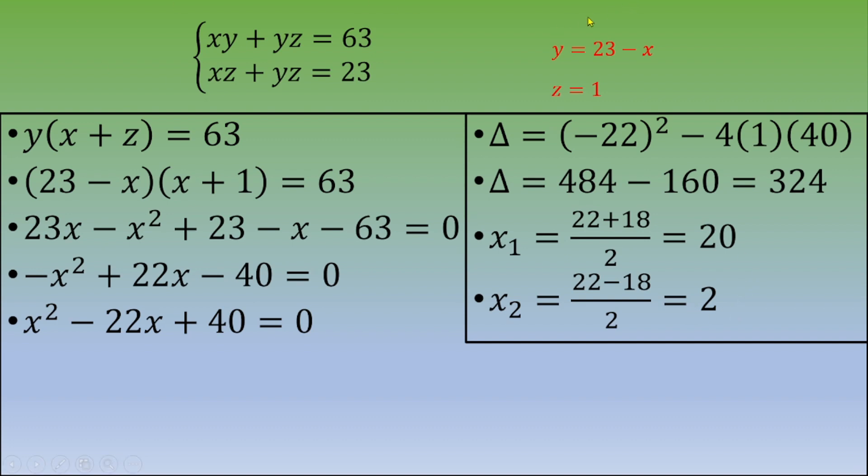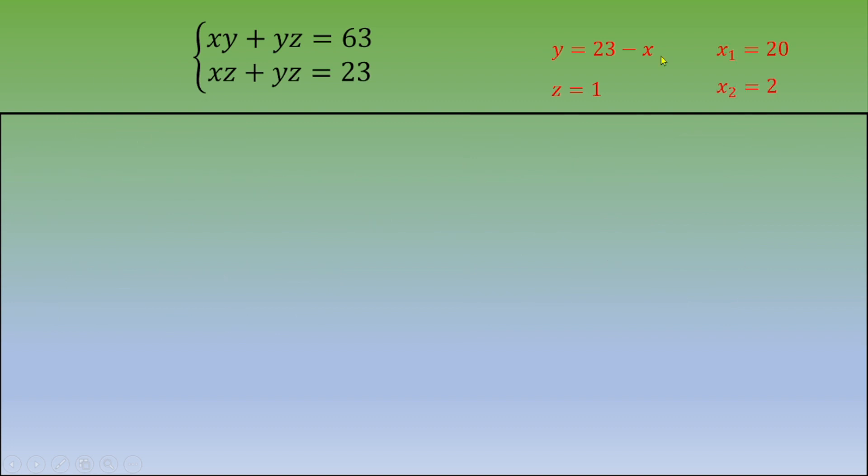So now we are going to calculate the values for y thanks to this equation. So we've got two values for x. So x could be 2 or 20. So we've got two values for y. First one. This is y1 equals 23 minus x1. x1 is 20. So 23 minus 20. So this is 3. Then the second value for y. This is 23 minus x2. x2 is 2. 23 minus 2. This is 21.